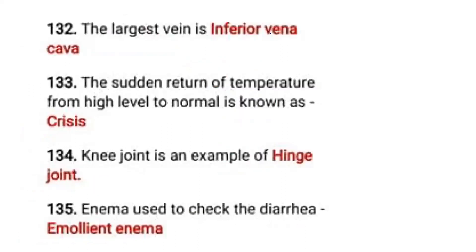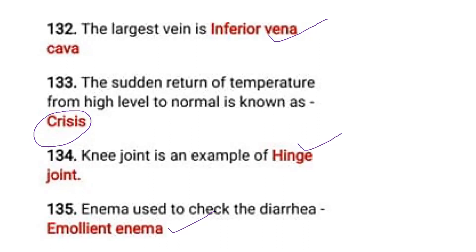The largest vein is the inferior vena cava. The sudden return of temperature from a high level to normal is known as crisis. The knee joint is an example of a hinge joint. The enema used to check diarrhea is the emollient enema.